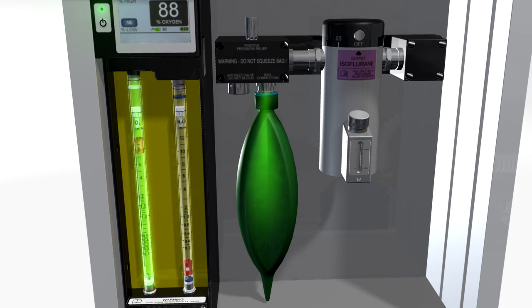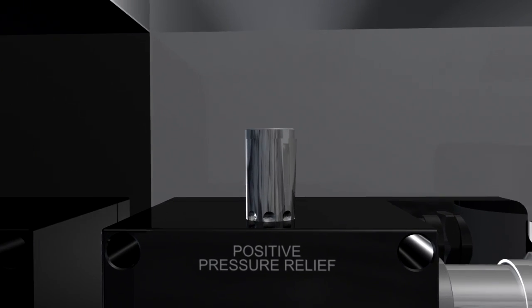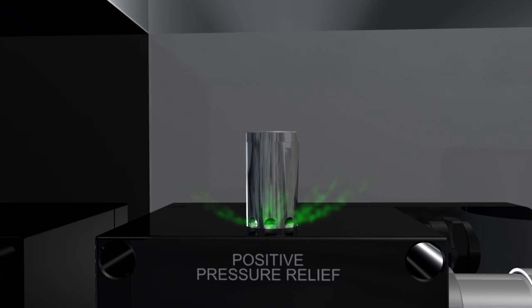The back bar serves three functions. First, the reservoir back stores the oxygen. It holds up to 2 liters. Second, the pressure relief valve limits pressure in the back bar to 5 centimeters of water, protecting the patient from harm.